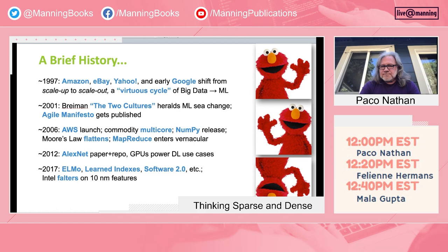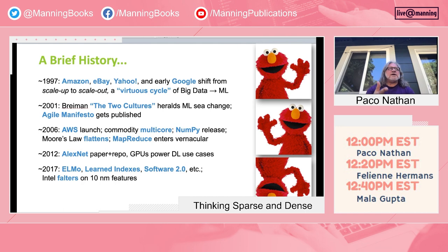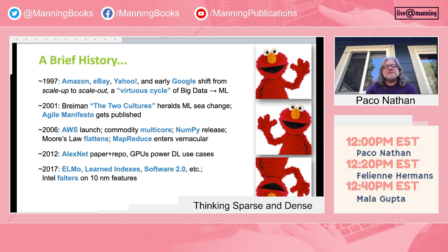I want to cover a brief history. Going back about 25 years, roughly every five years there's a bump in technology with a lot of ramifications for the software engineering side of AI applications. If you roll back to Q3 of 1997, there were four teams working independently on horizontal scale-out — Greg Linden at Amazon, Randy Shoup at eBay, and others. They came up with scale-out mostly on Linux boxes, and it really set the stage for big data and cloud computing, establishing what Andrew Ng calls the virtuous cycle of big data leading into machine learning.